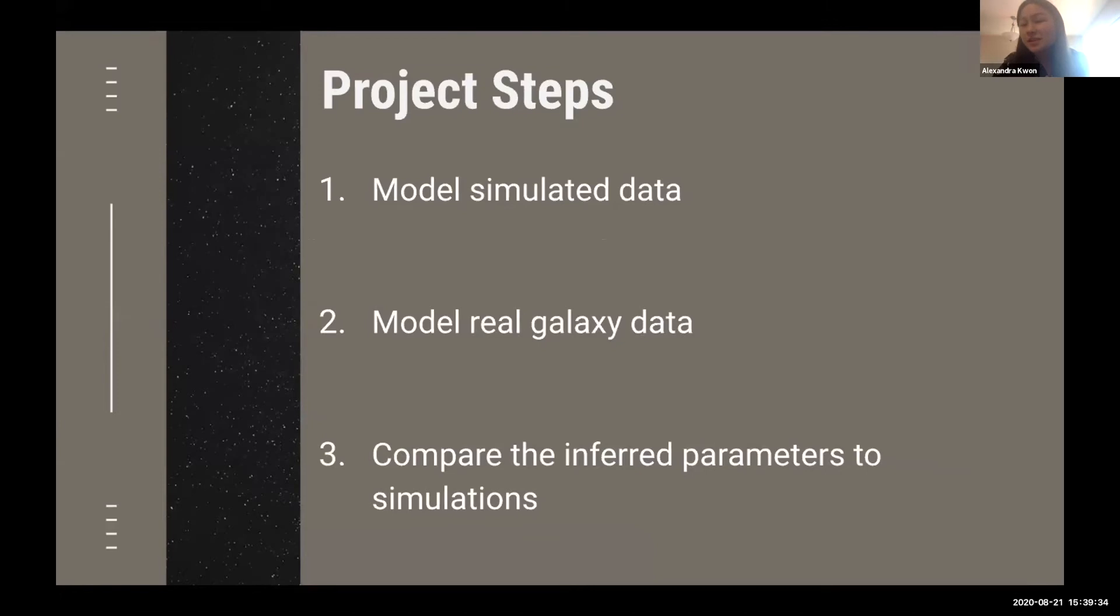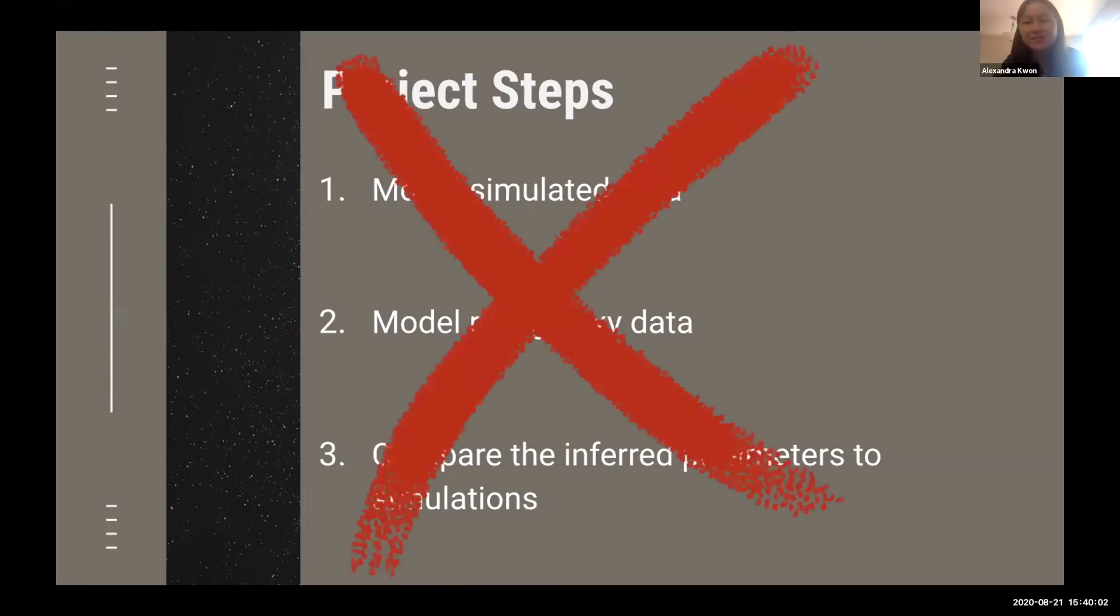Once we finish modeling the simulated data, we will move on to modeling the real galaxy data. We will likely choose the Sculptor dwarf galaxy because there is a lot of information about the metallicities of the stars within Sculptor, as well as approximate form times of those stars. Finally, once we have our inferred parameters, we will compare those to other simulations to see if we can constrain even more information about the galaxy. The project isn't as simple as it sounds. Before we make any inferences, we need to build a functional model, which is what we've spent most of the summer doing.